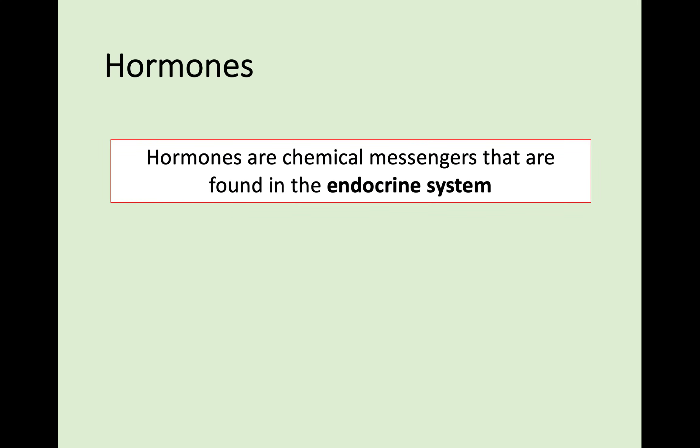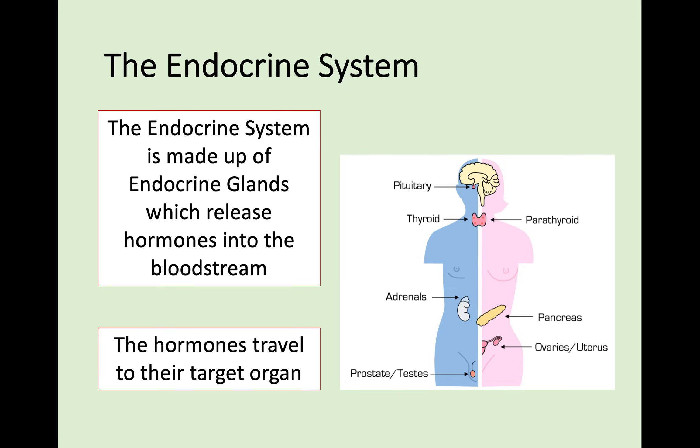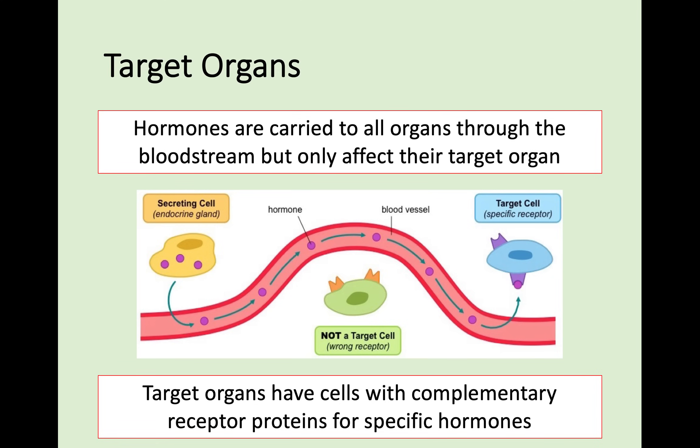The second part of controlling communication is hormonal control, and we're going to compare that to neural control in a moment. Hormones are chemical messengers and they are found in the system called the endocrine system. You could be asked to compare hormones and neurons — neurons are electrical messengers, they're electrical impulses, whereas hormones are chemical. This endocrine system is made up of different endocrine glands, and these glands release certain hormones into the bloodstream. Once the hormones are in the bloodstream, they travel to interact with their target organ — the only organ that they will work with.